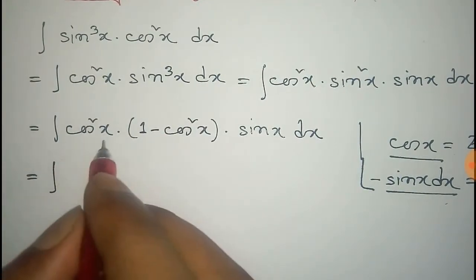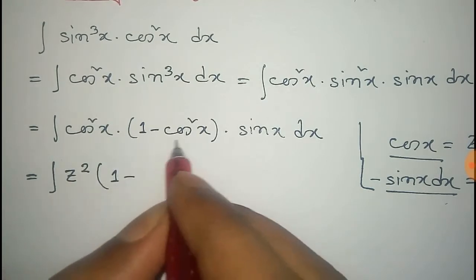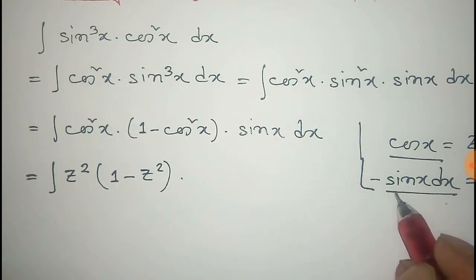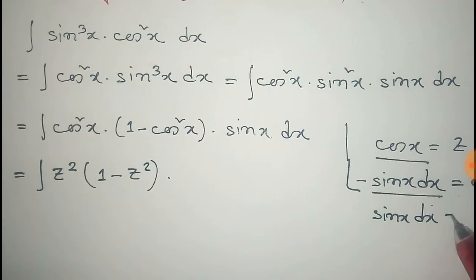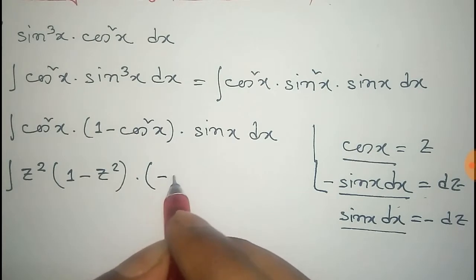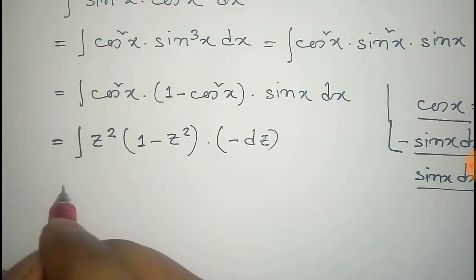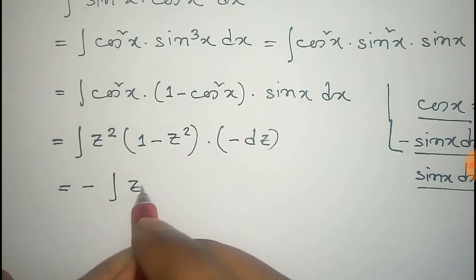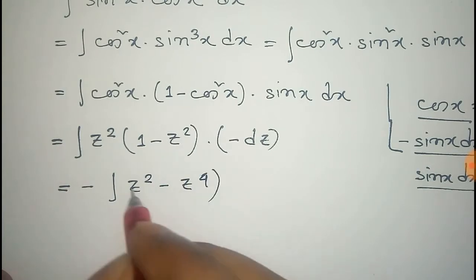The value of cosine x is z, so that is z square into 1 minus z square. The value of sine x dx equals minus dz, so we put minus dz there. That equals negative integral of z square minus z to the power 4, dz.